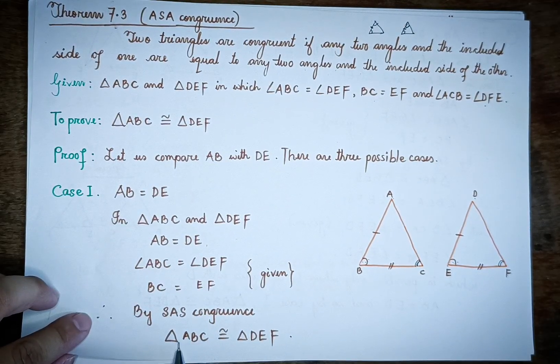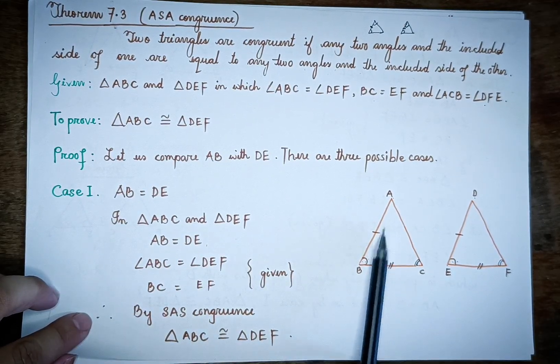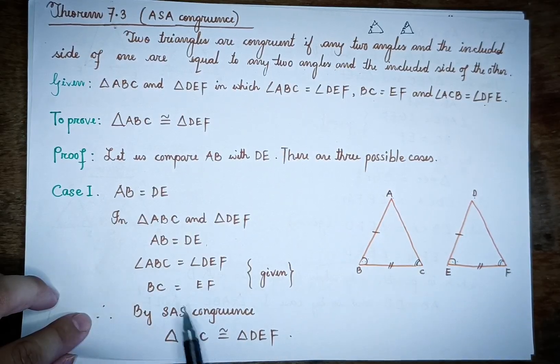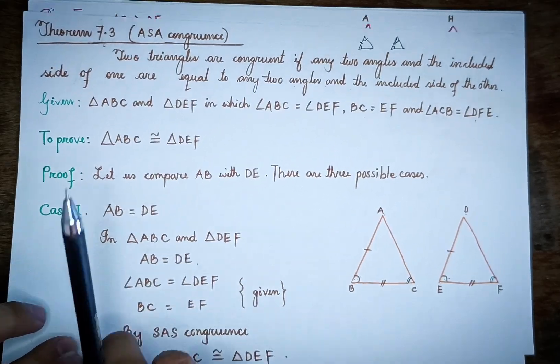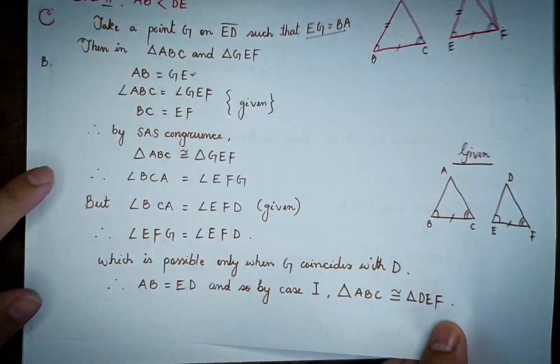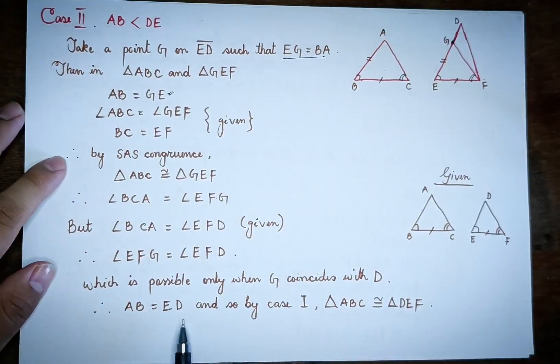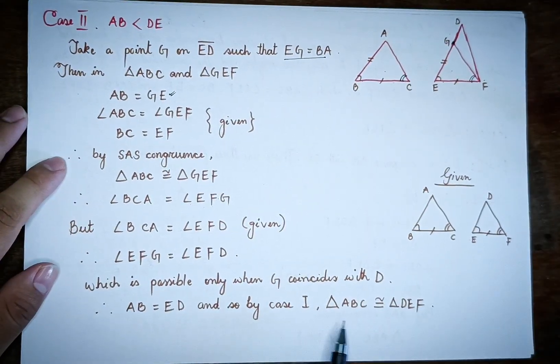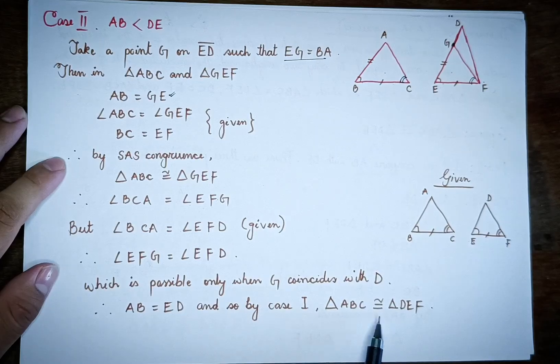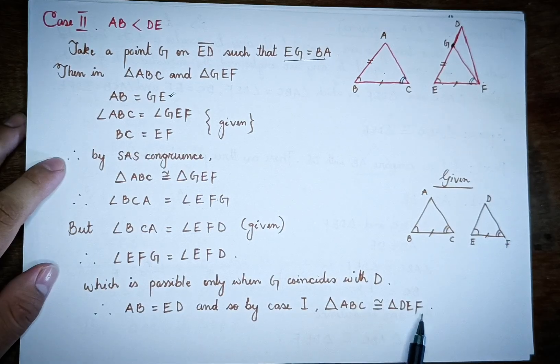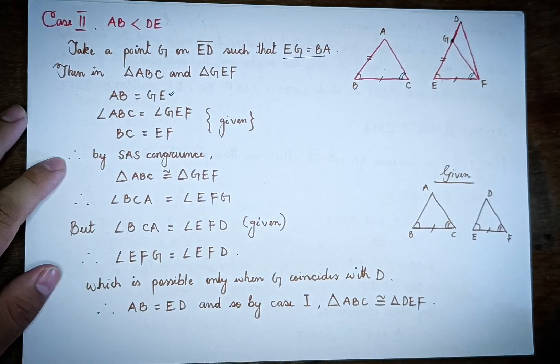If it is congruent, then ABC and DEF are congruent. So by Case 1, triangle ABC is congruent to triangle DEF.